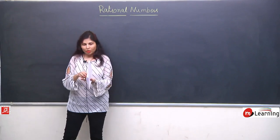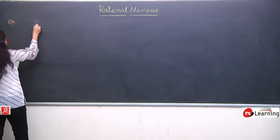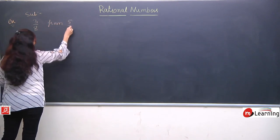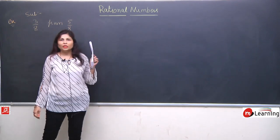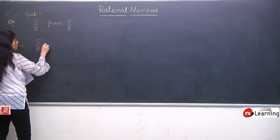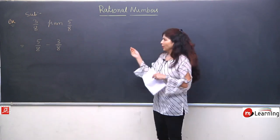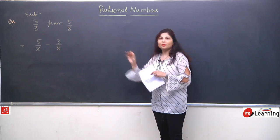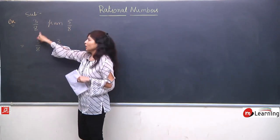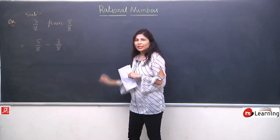Now, a simple question based on subtraction. The word 'from' means we always do second term minus first term. For example: subtract 3/8 from 5/8. The solution will be 5/8 - 3/8. We generally forget the meaning of 'from' and subtract in the wrong order. But here it is clearly mentioned — subtract 3/8 from 5/8 — so the second term comes first and first term comes second.